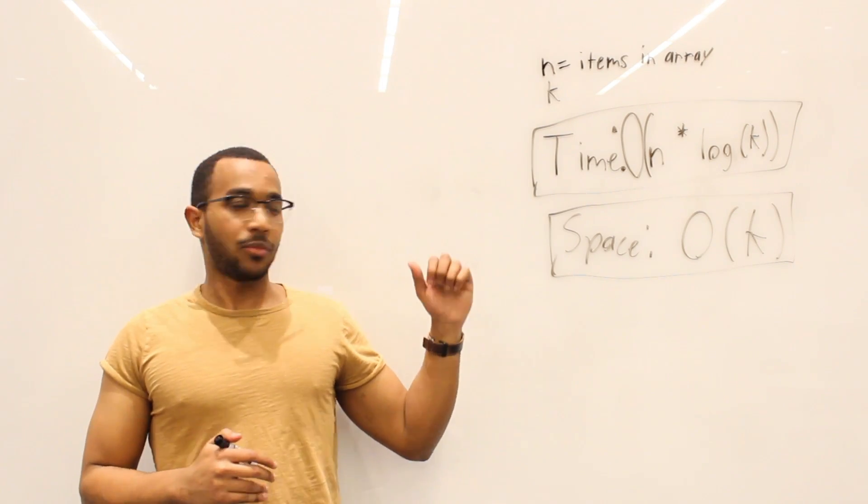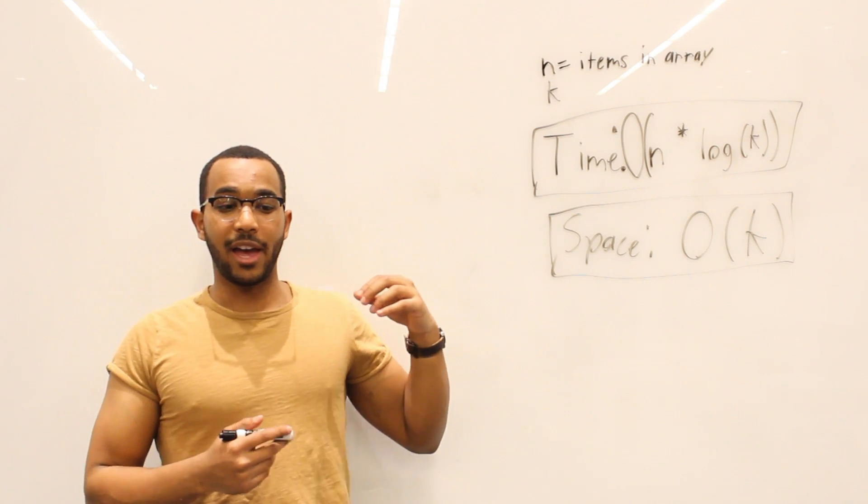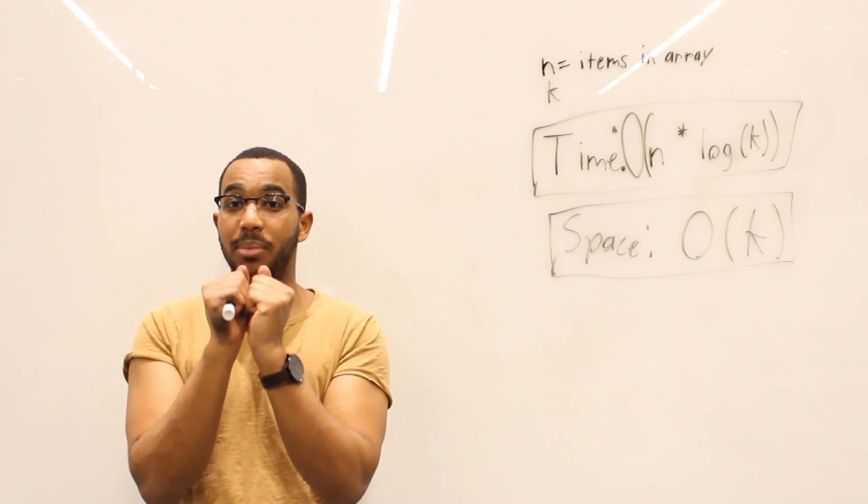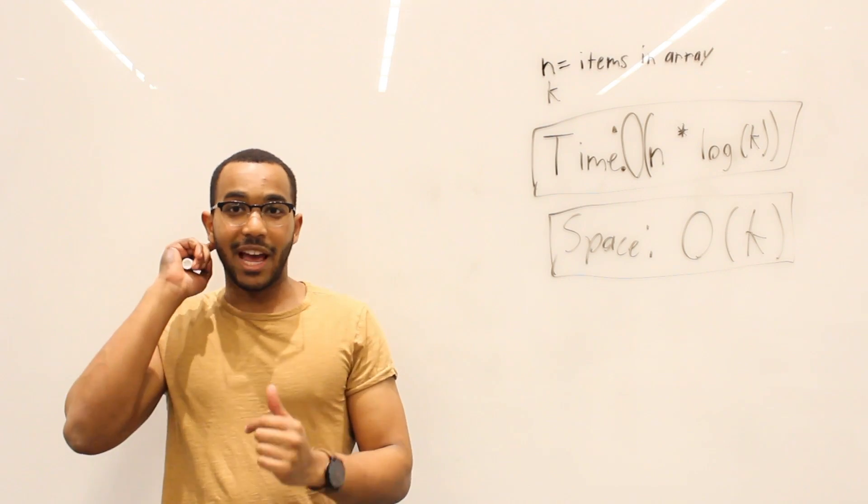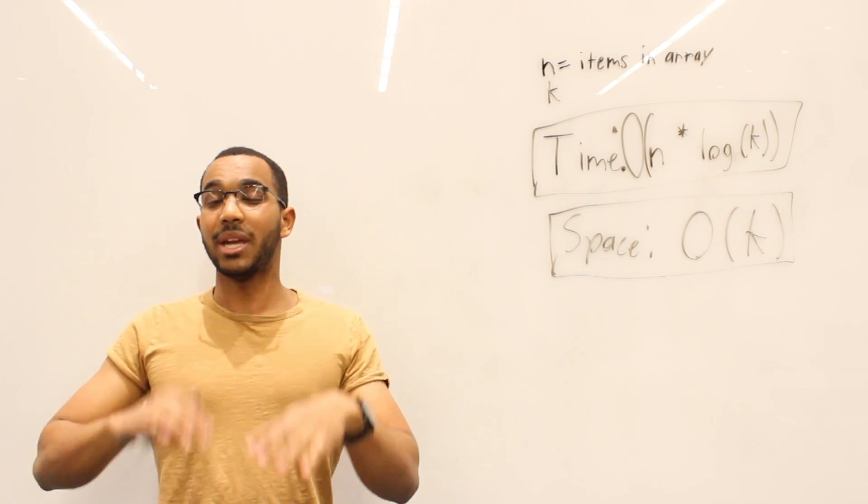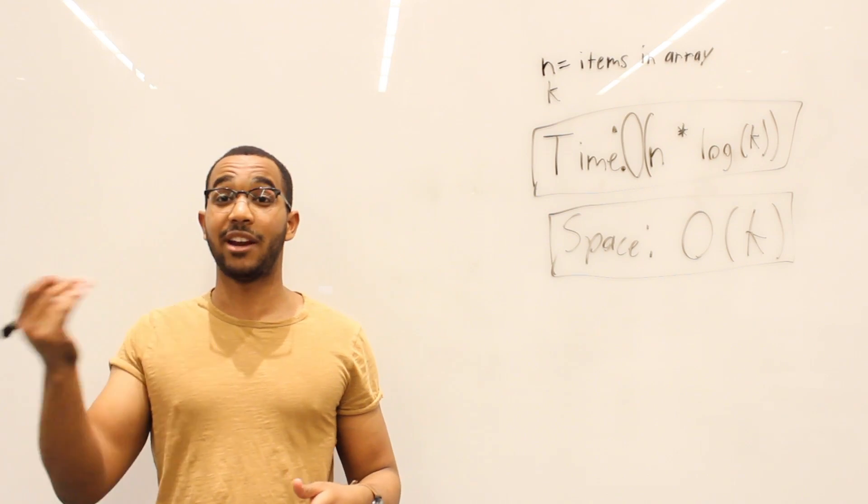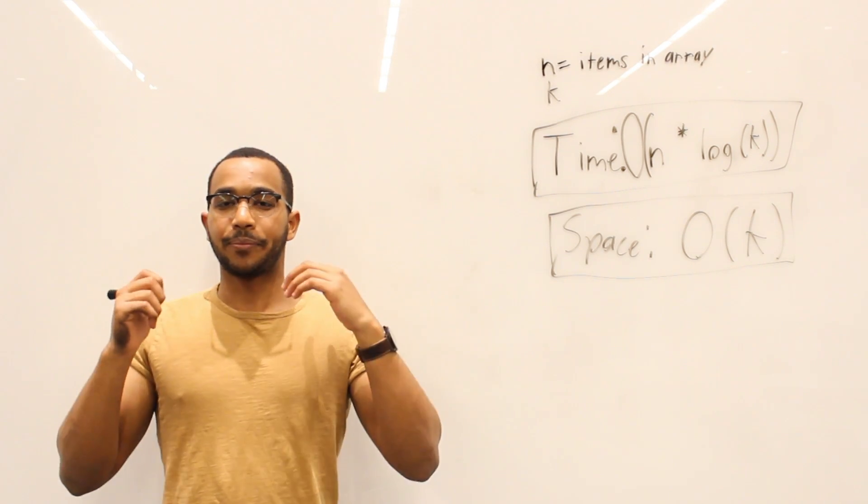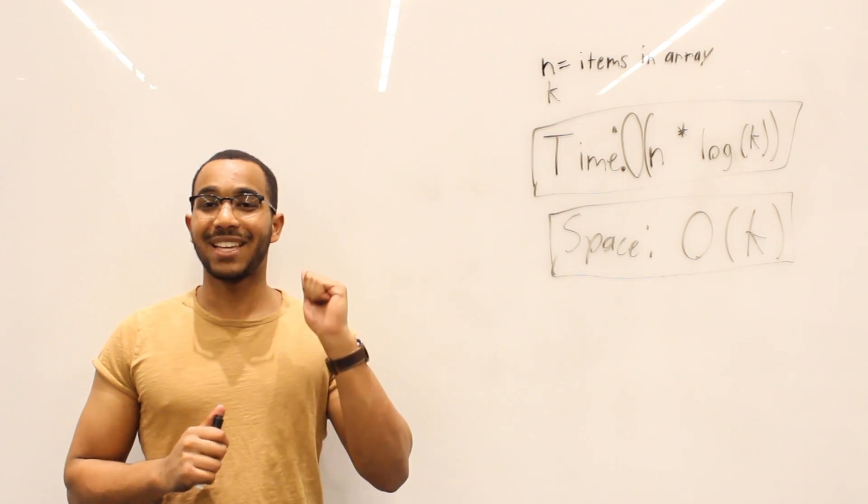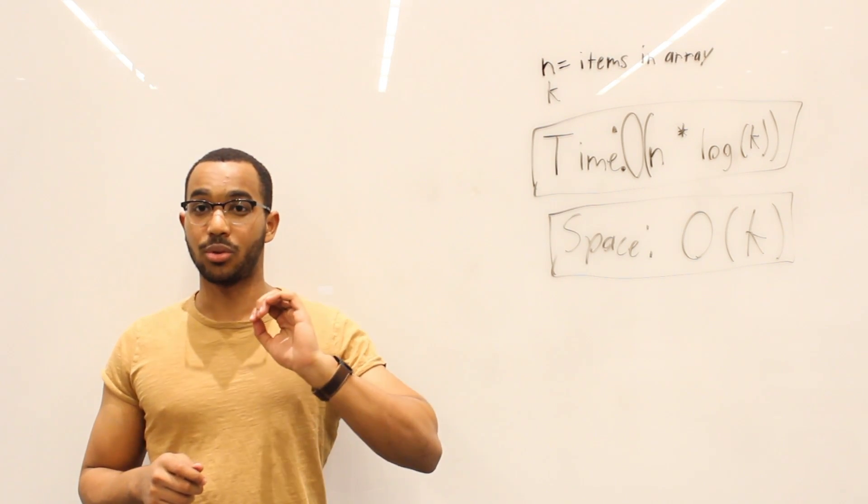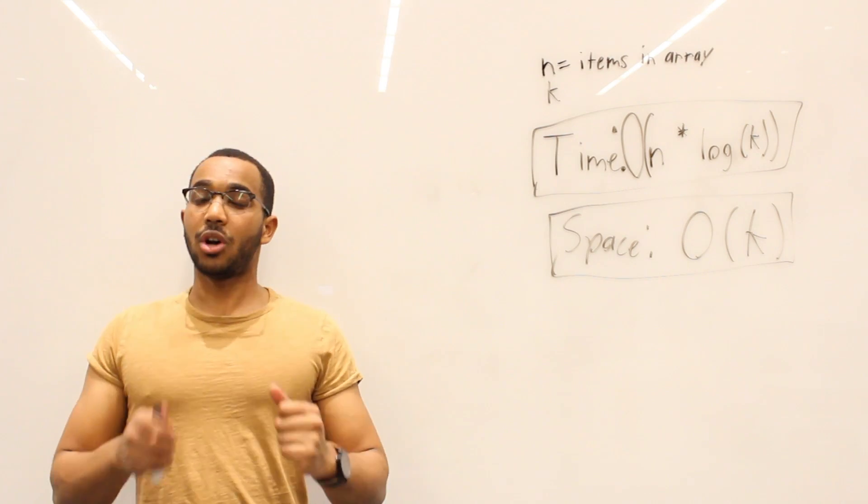So our time and space complexity are going to be... So first of all, let's define our variables here. N is the total items in the array. And K is the distance. The distance that an item can be from its final position left and right. What we need to consider is what are we doing for each element? Every element is going to touch the min heap we're using. Remember, min heap keeps the smallest item at the top. And well, depending on how you implement it, it might not be a binary heap. It might be a linked list. So there's really no top. But whatever the smallest item is going to be at the top of the heap.